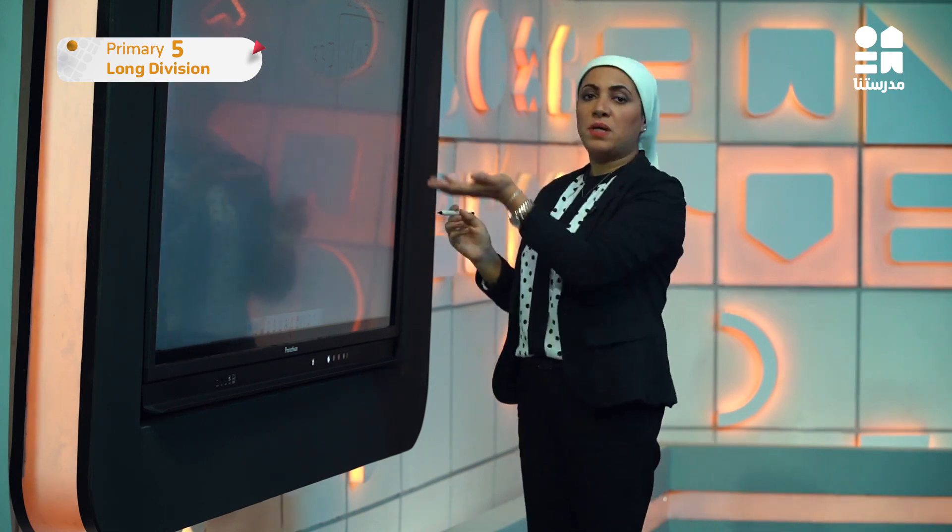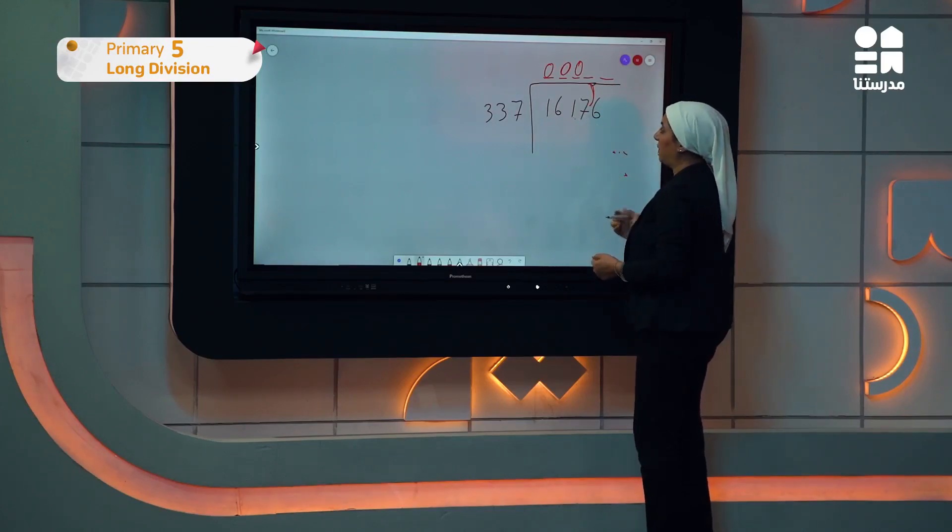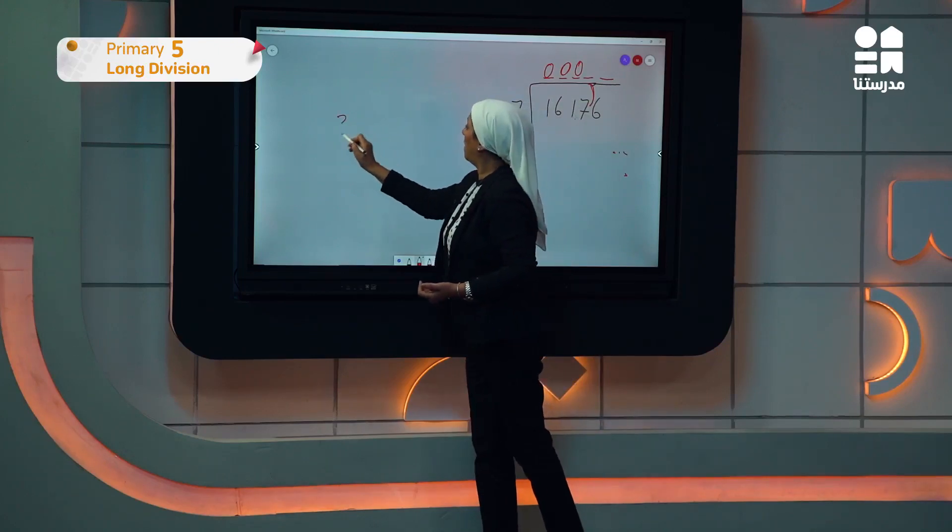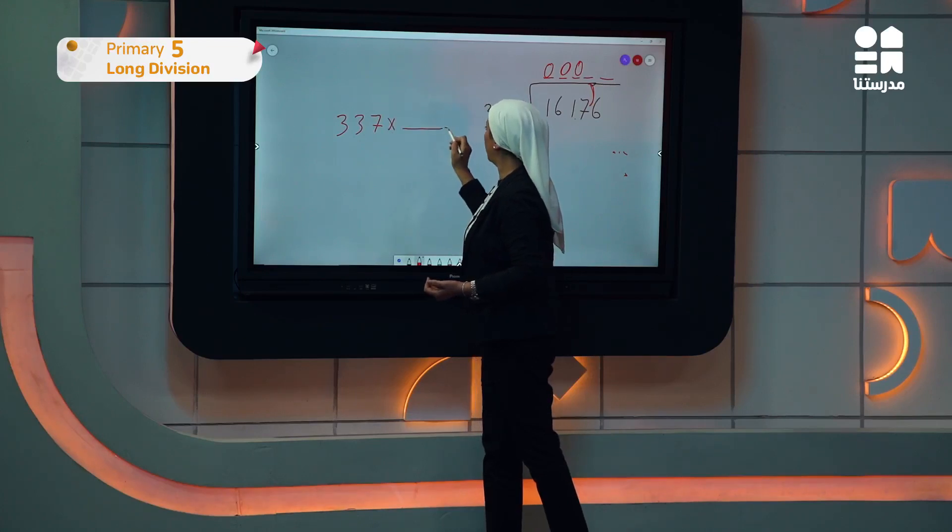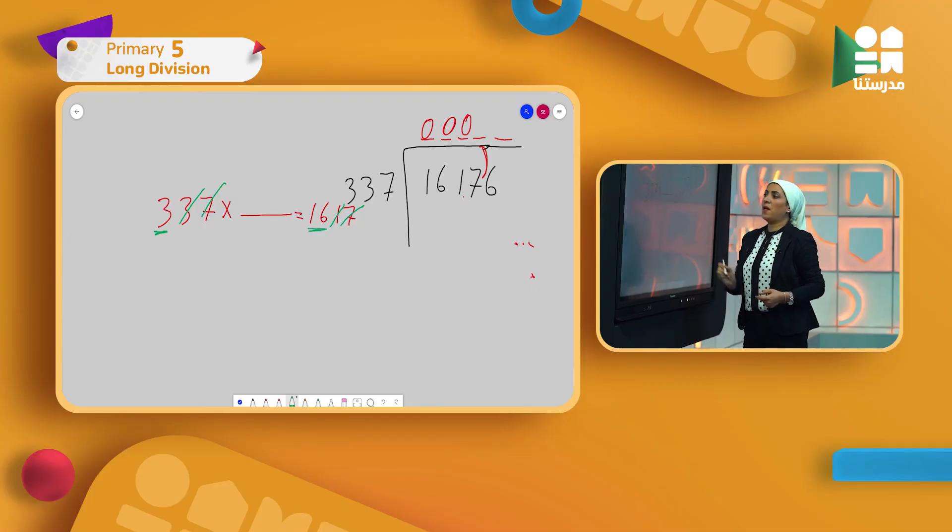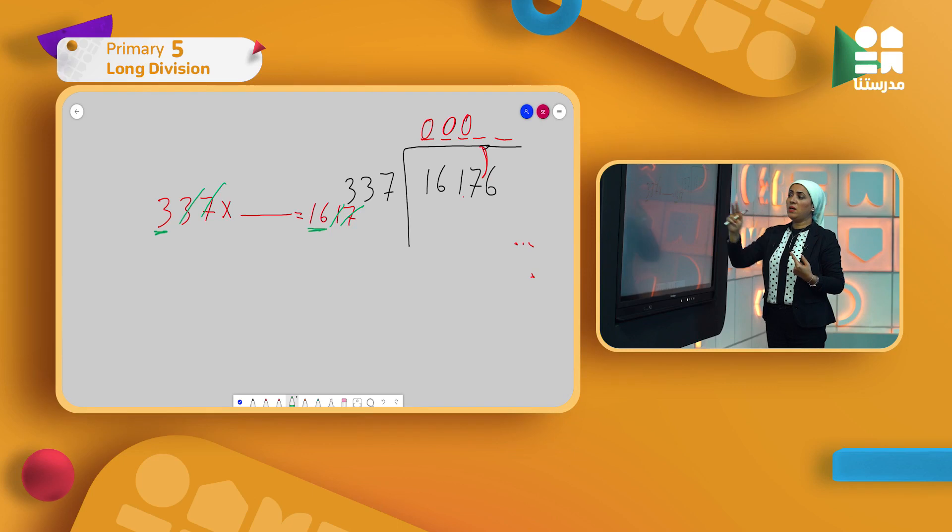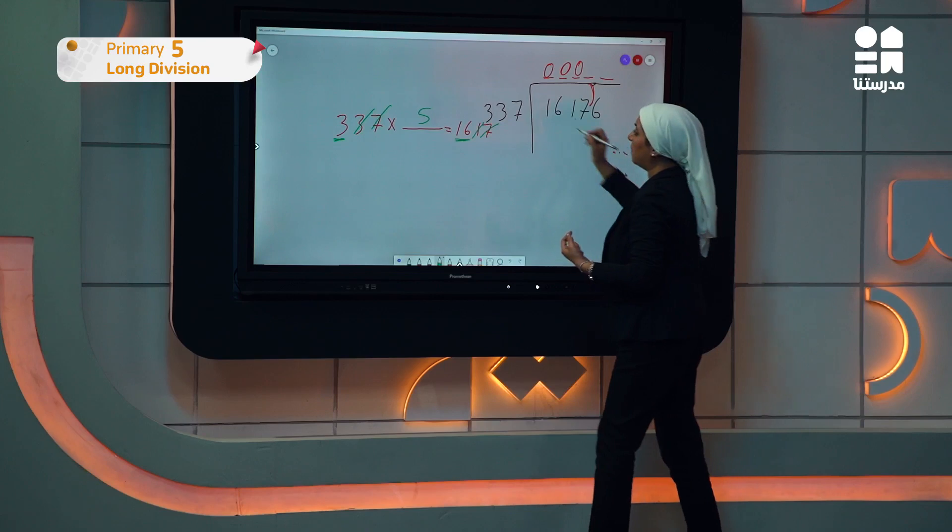Then seven. Is 1617 equal to or greater than 337? Of course. So I'll put a comma. This is where I stop and I'll start to work. 337 times what gives me 1617? I want to divide. Cross the seven with the seven, cross the one with the three. What's left for me from the divisor is the three. Let me see what's left from the dividend, which is 16.